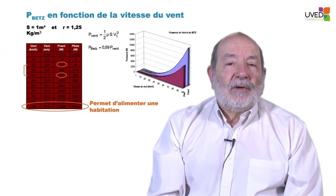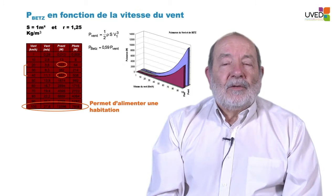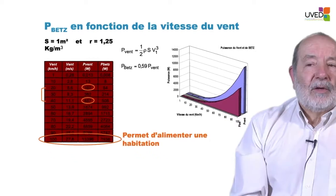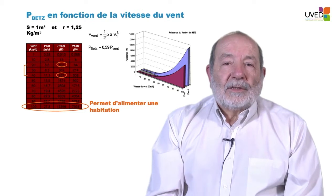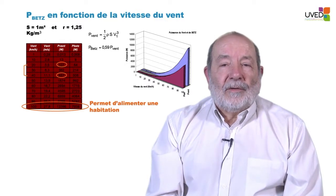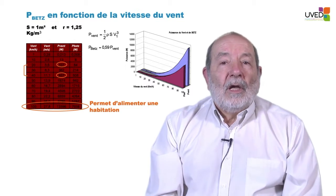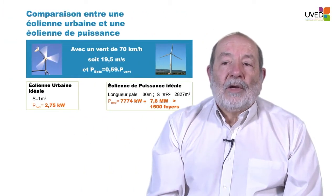We have drawn here graphs of the wind power and Betz's power for a surface of one square meter with an air mass density of 1.25 kg/m³. When the wind changes from one kilometer per hour to 100 kilometers per hour, the wind power changes from a few milliwatts to more than 13 kilowatts. Betz's power — 0.59 times the wind power — will vary from a few milliwatts to approximately eight kilowatts, which would be enough to supply power to one house if the windmill is perfect and the wind blows permanently at 100 kilometers per hour.